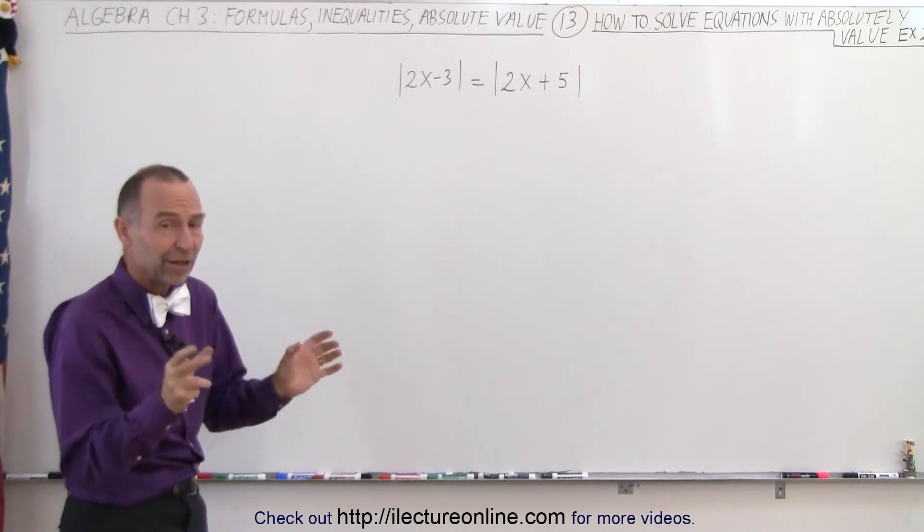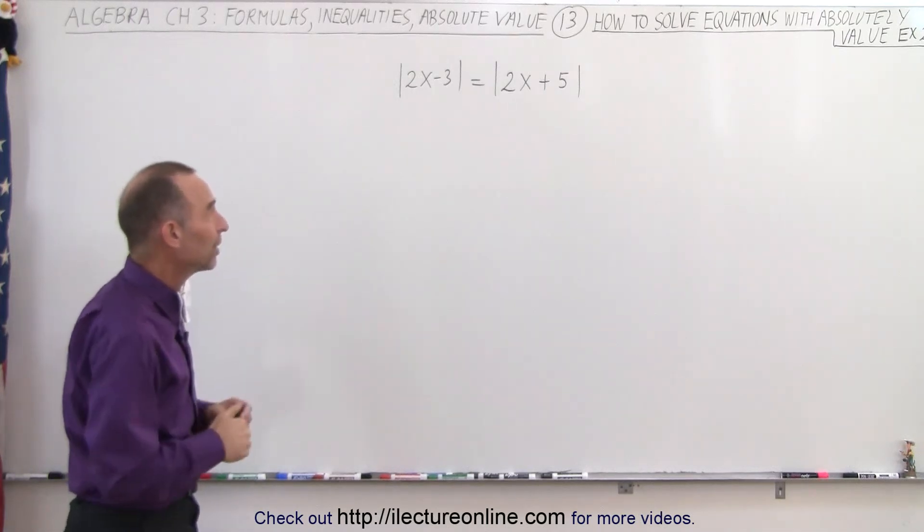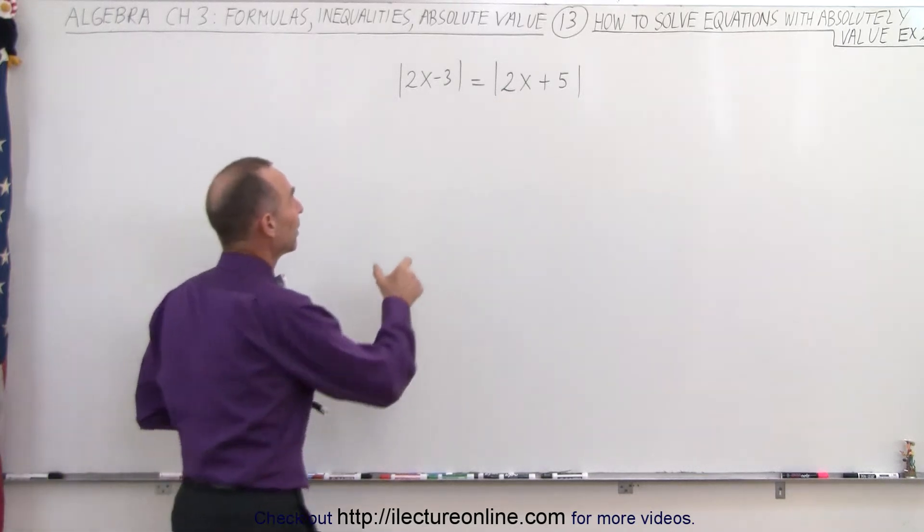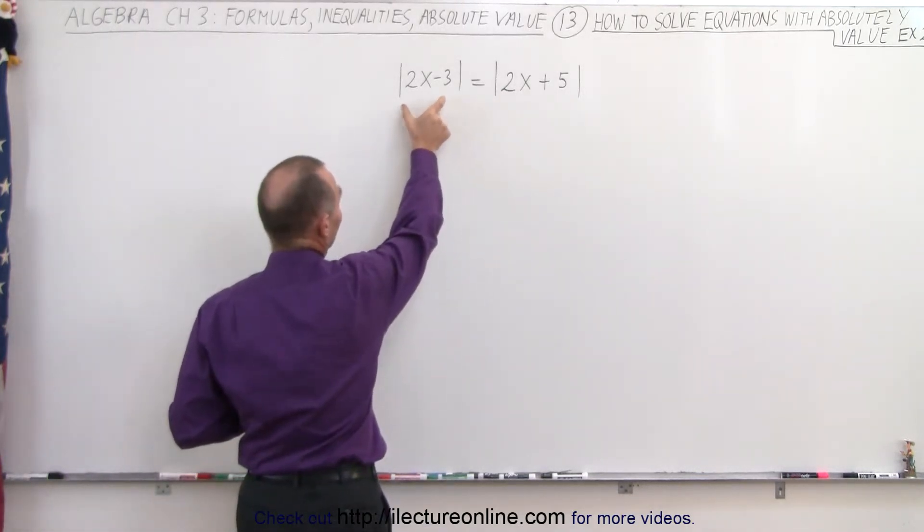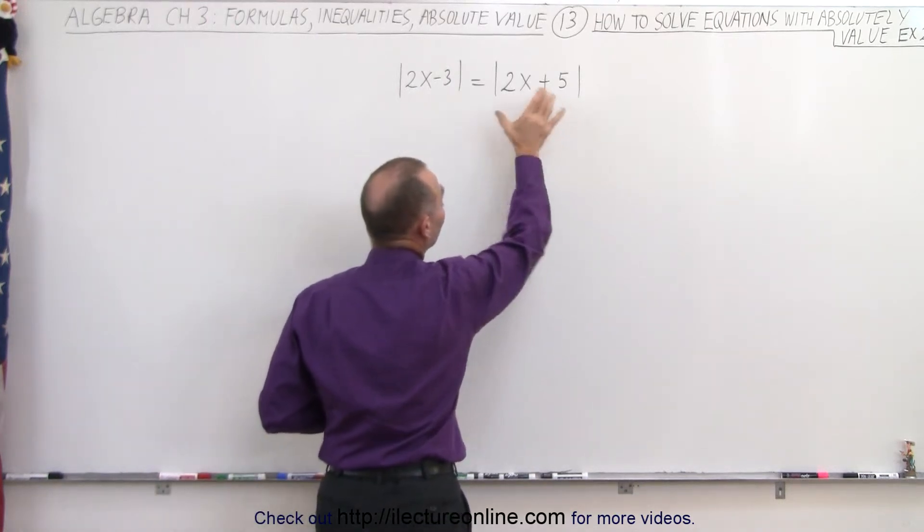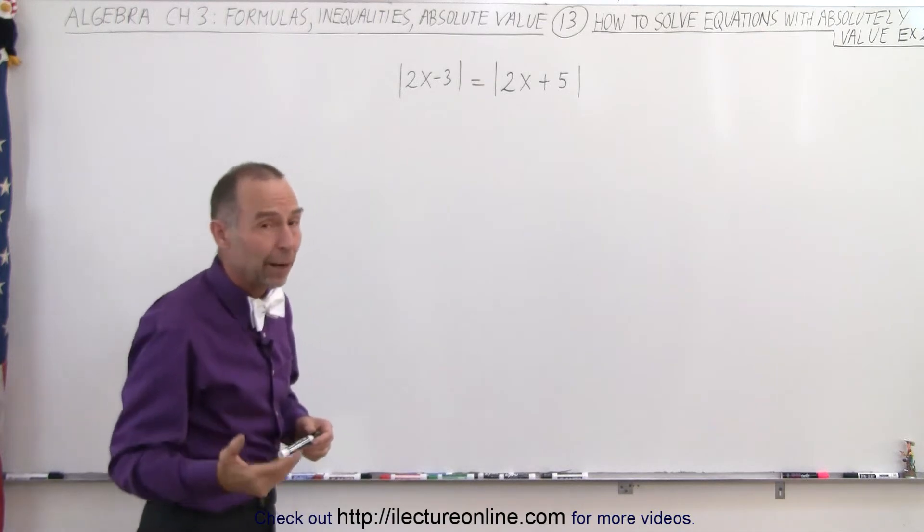What if we have an absolute value sign on both sides of the equal sign? Well, it turns out the technique is about the same as before. We're going to take what's inside the absolute value signs on the left and set it equal to the positive and negative value of what's inside the absolute value sign on the right.